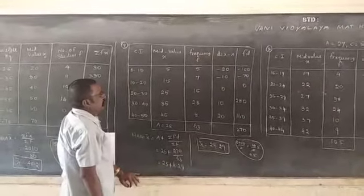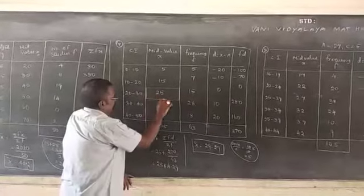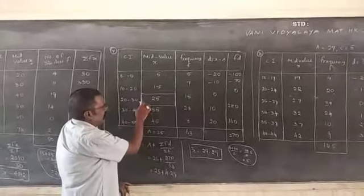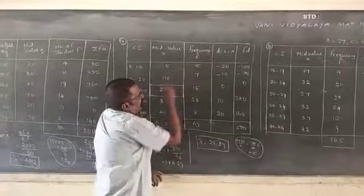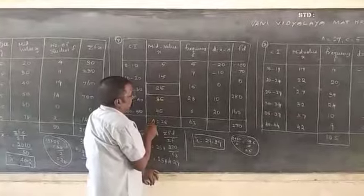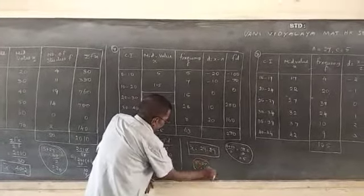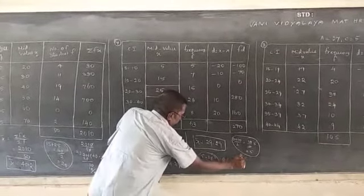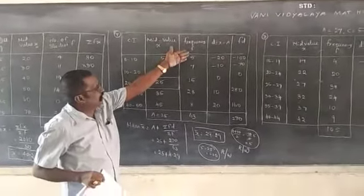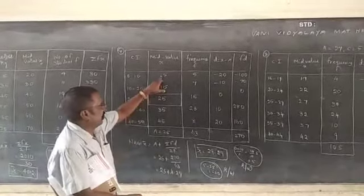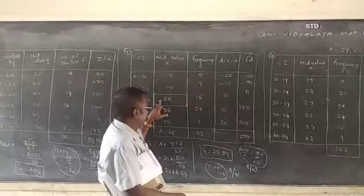Here A equal to, this one is average, mid-value. This one is A. Here, X minus A, X minus A equal to, X minus A. These are 5, A equal to 25, 5 minus 25 equal to minus 20. So, A equal to 25, this is called A.